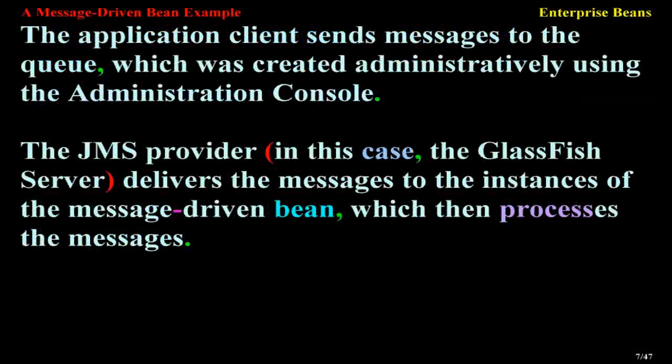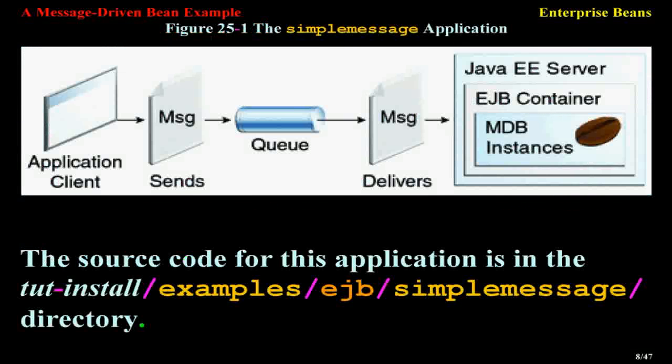The application client sends messages to the queue, which was created administratively using the administration console. The JMS provider — in this case, the GlassFish server — delivers the messages to the instances of the message-driven bean, which then processes the messages. Figure 25-1 illustrates the structure of this application. The source code for this application is in the TUT install examples EJB Simple Message directory.